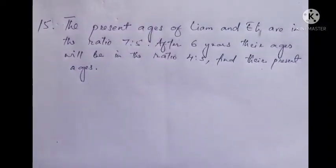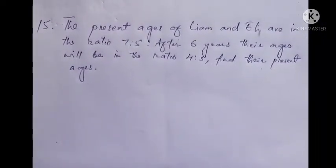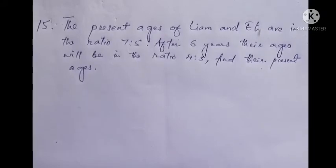Exercise 4.1, question number 15. The present ages of Liam and Eli are in the ratio 7 is to 5. After 6 years, their ages will be in the ratio 4 is to 3. Find their present ages.